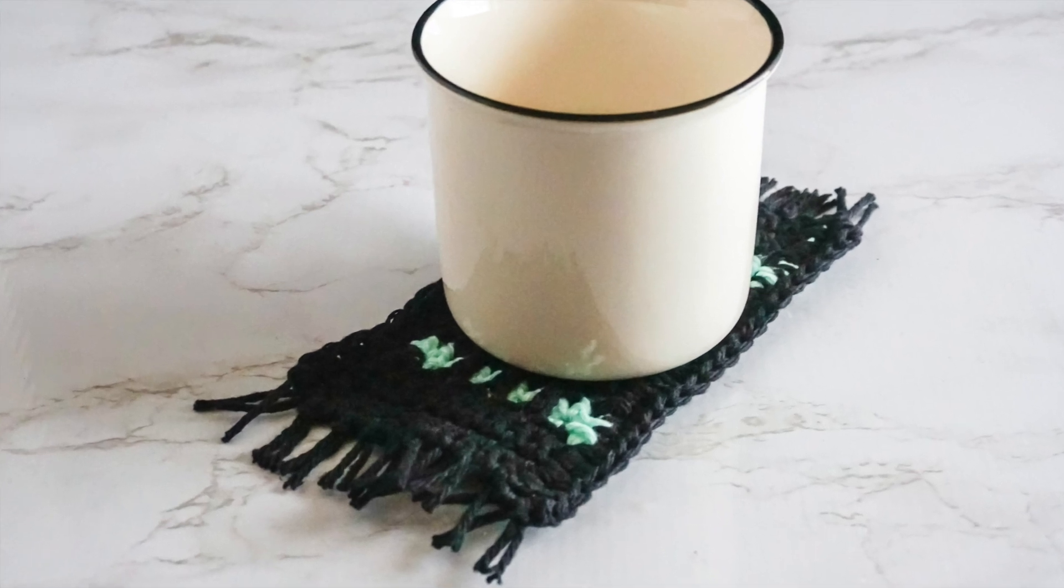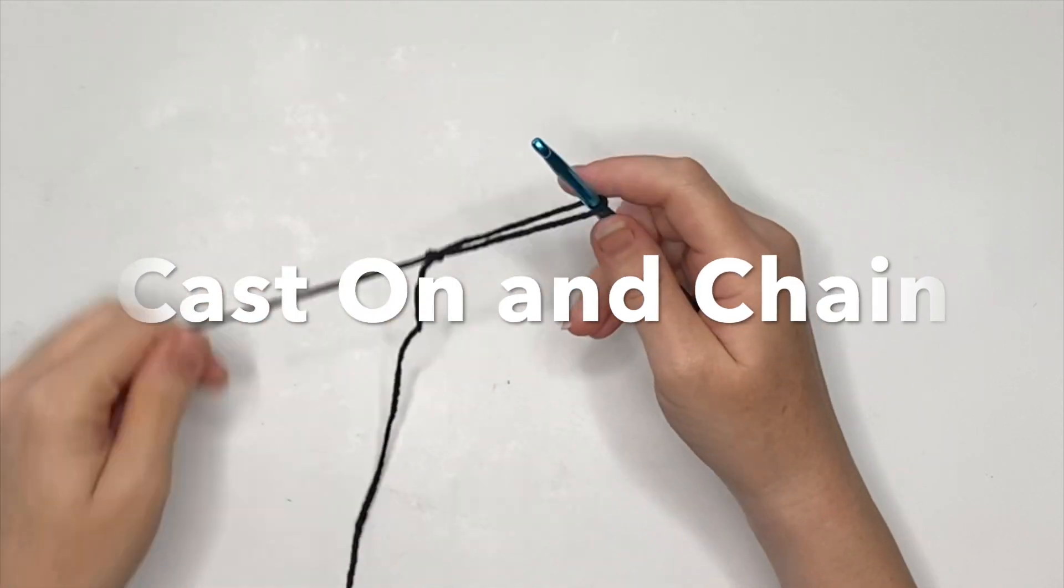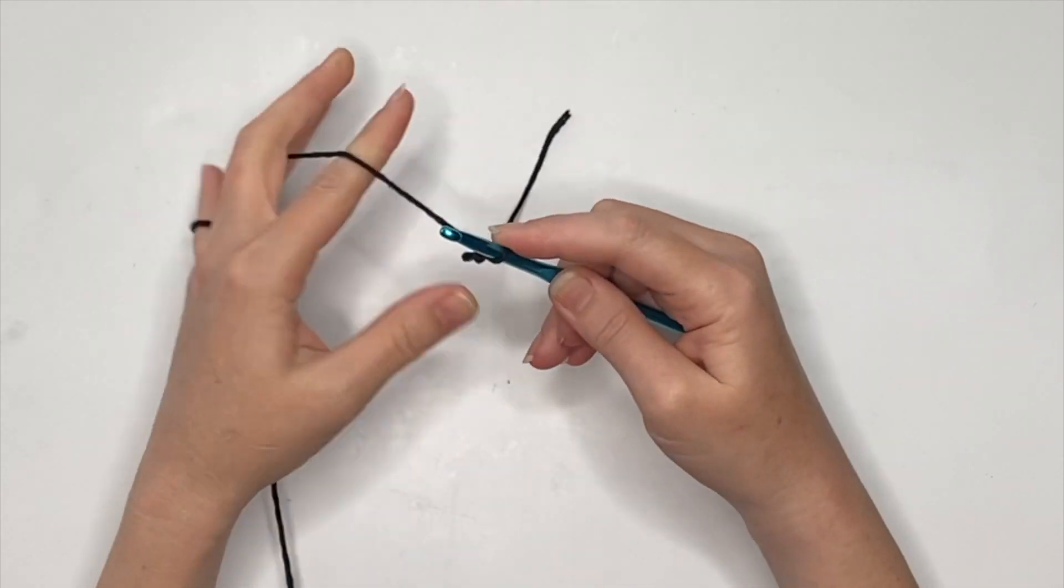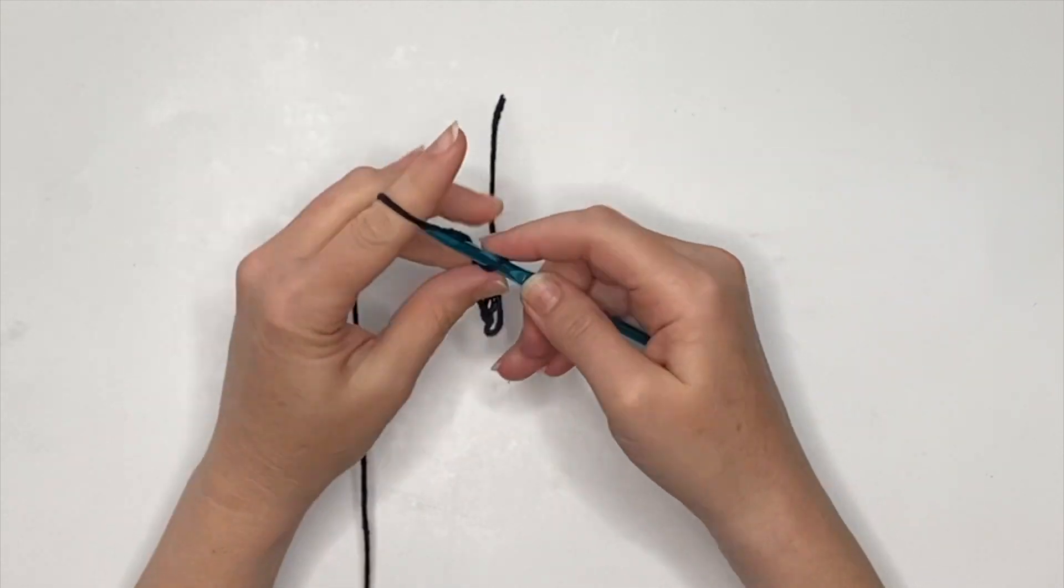Today we're going to make this adorable little mug rug. To get started, we're just going to cast on and chain 10 with our color A, which is the black cotton thread.